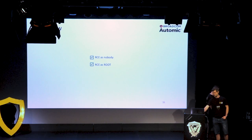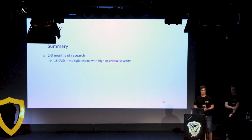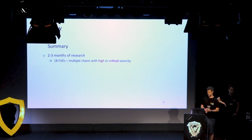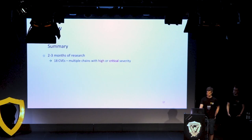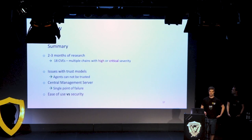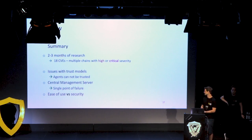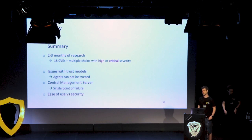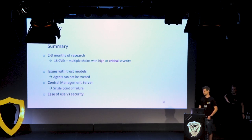In summary, we've seen four different solutions. Overall we spent around two to three months of total research time, spread across two years, and were assigned 18 different CVEs — and not every issue we found even got a CVE. There were multiple attack chains with high or critical severity. We identified common themes: a big one was the issue with trust. These are distributed systems from the same vendor, and agents are generally trusted by the central component, but the overall solution trusts its components a bit too much, leading to many security issues. The central management server is always a single point of failure — just like a domain controller — and if an attacker compromises it, they get access to all systems.